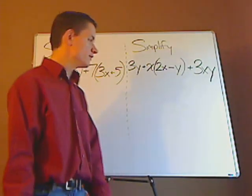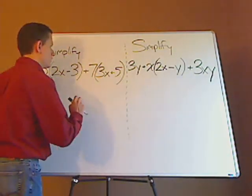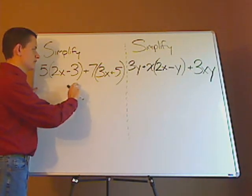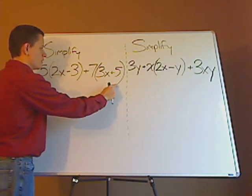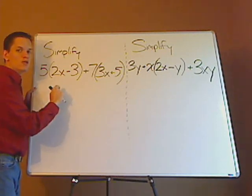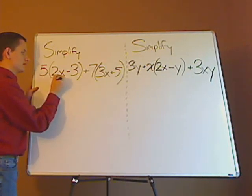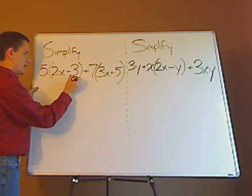Alright, what you should have noticed is that you can't simplify what's inside the parentheses. So what you have to do is use the distributive property. So you distribute the 5 to the 2x, and you distribute the 5 to the 3.